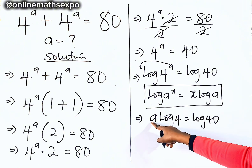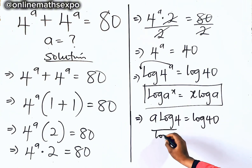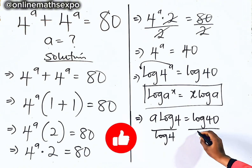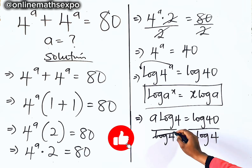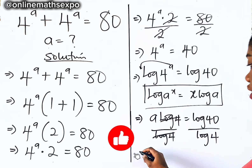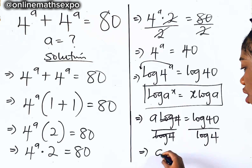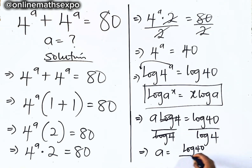Now to get 8, we divide. So we divide both sides by log of 4. This cancels out, and we have our answer: 8 is equal to log of 40 divided by log of 4.